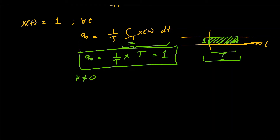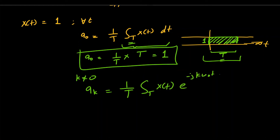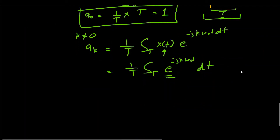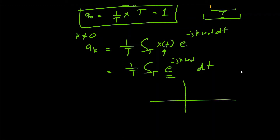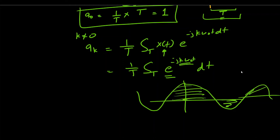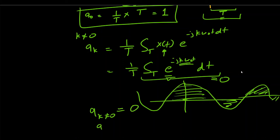But what if k is not equal to 0? We have a_k equal to (1/T) times the integral of e^{-jk·ω₀t} dt. Since this exponential is oscillating at k times ω₀, each positive lobe cancels with the corresponding negative lobe, so the integral equals 0. Hence a_k equals 0 for all k not equal to 0, and a_0 is simply 1.